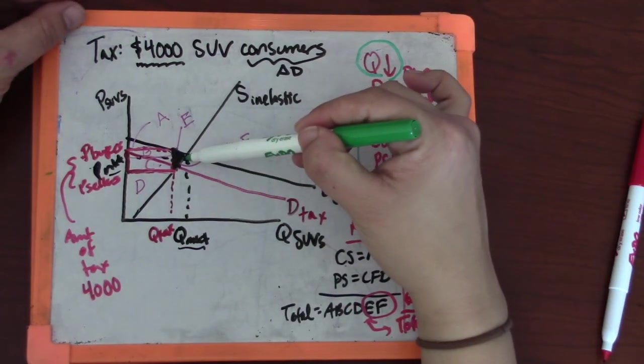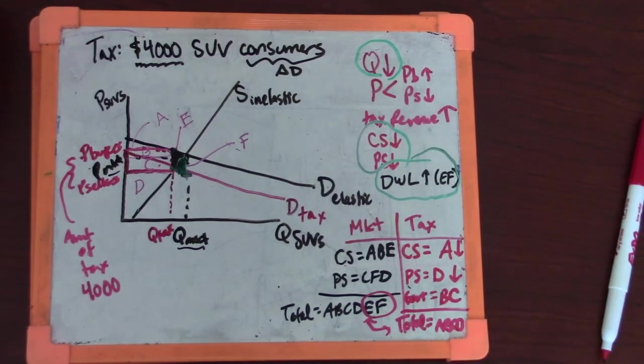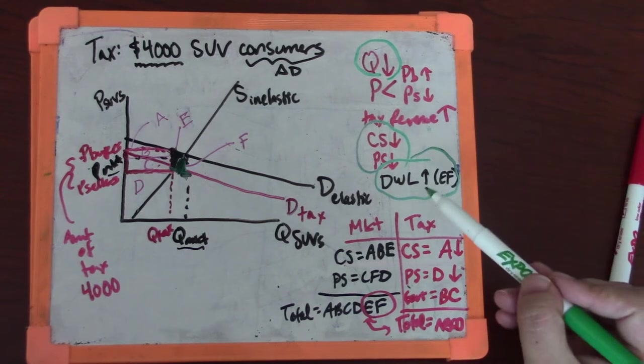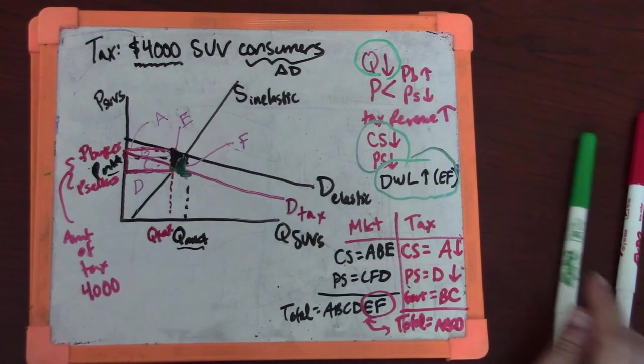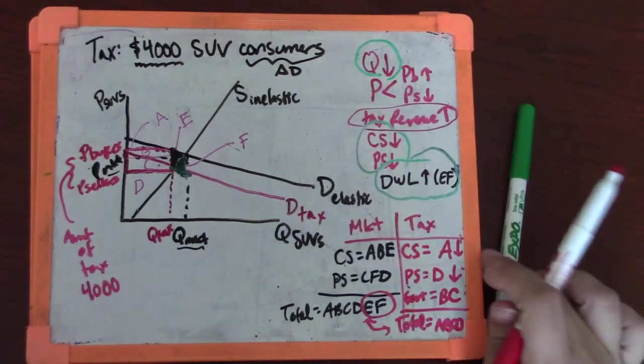Now that you know about externalities though, you know that there was an existing deadweight loss in this graph already. All of those extra units that the market was making that society did not value as much as they were costing society, those were a deadweight loss to begin with. After this, we're basically just neutral. That's kind of a subtlety.